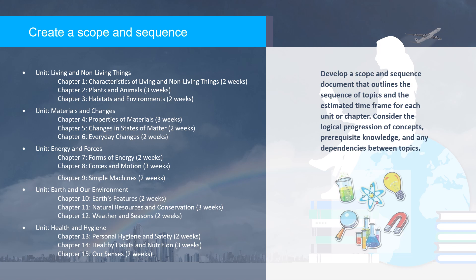Step 4: Create a scope and sequence. Develop a scope and sequence document that outlines the sequence of topics and the estimated time frame for each unit or chapter. Consider the logical progression of concepts, prerequisite knowledge, and any dependencies between topics. Here are examples of adapted scope and sequence information outlining the sequence of topics and estimated time frames for each unit or chapter in primary science. The topics have been adjusted to align with the curriculum and learning objectives appropriate for primary level students.